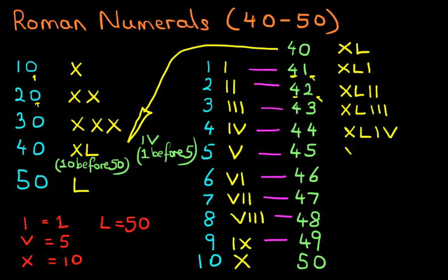45 is, we do the 40, and then we write down 5, which is V. 46, we write 40, and then write down 6. What is 6? It is VI.